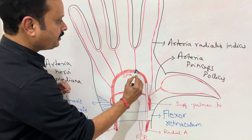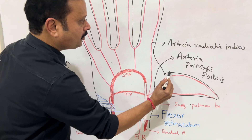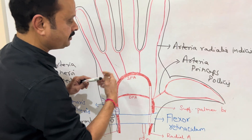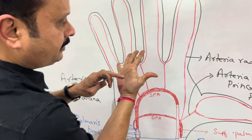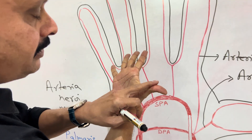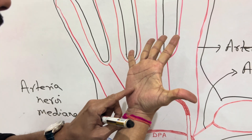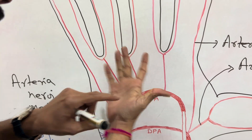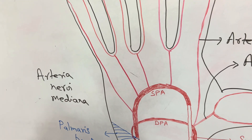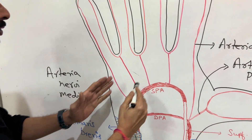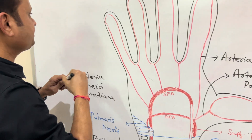This arch is situated at the level of the distal border of the extended thumb. If the thumb is extended or extended and abducted, this arch is located along that distal border. Branches of the superficial palmar arch arise through this arch.